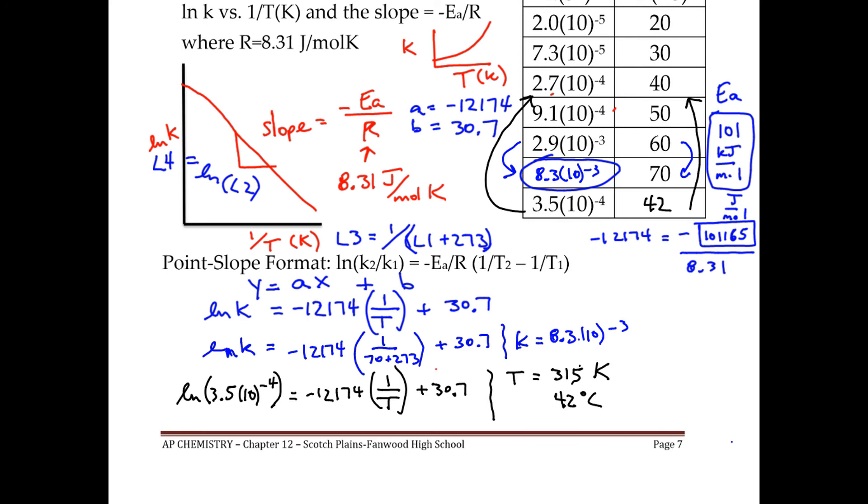Now let's suppose that you were given only two values. Let's say you had to find the activation energy and you were only given this in the chart. Two Ks and two temperatures. Then you could use this form, the point slope format of the equation. So remember when we did this with vapor pressure, it's the same deal. There are five variables. So one, two, three, four, five variables.